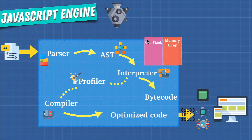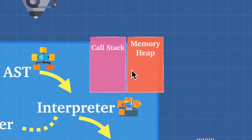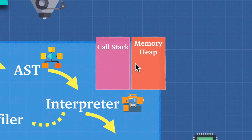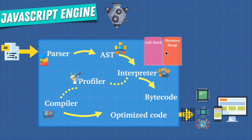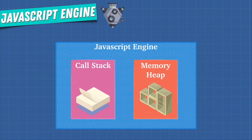You might have wondered why I ignored this little pink and orange box — the call stack and the memory heap. We're going to talk about this over the next couple of videos. The JavaScript engine does a lot of work for us, but the biggest thing is reading our code and executing it. The two most important things are: a place to store and write information, and a place to actually run and keep track of what's happening line by line. We use the call stack and memory heap for that.